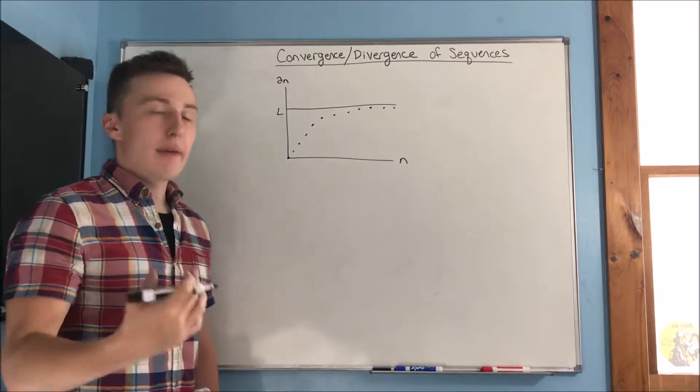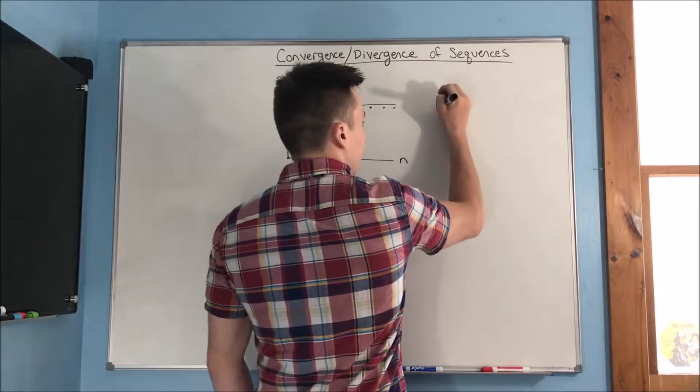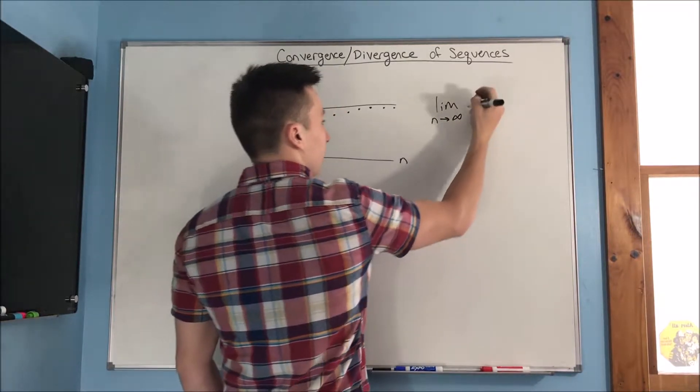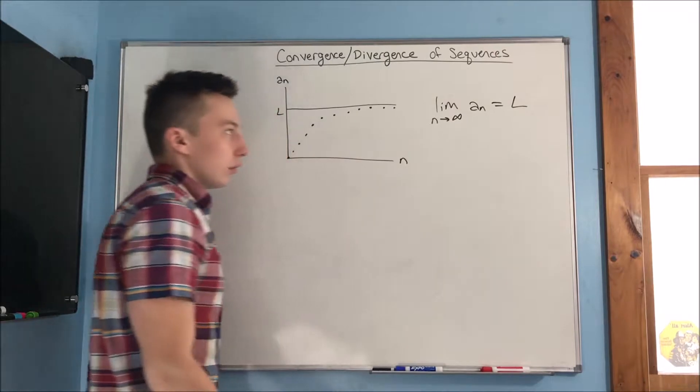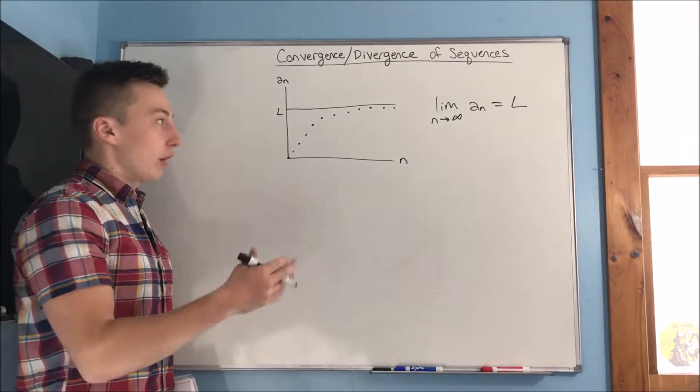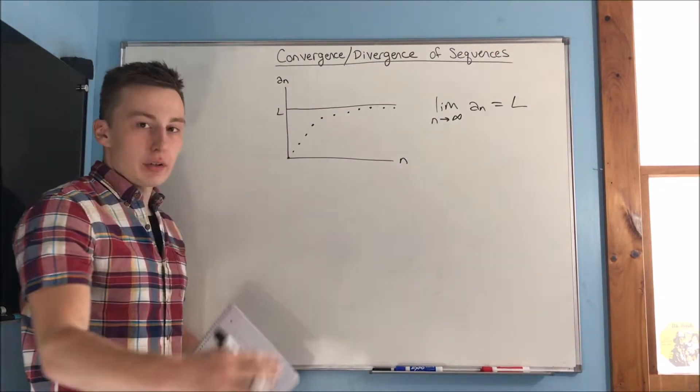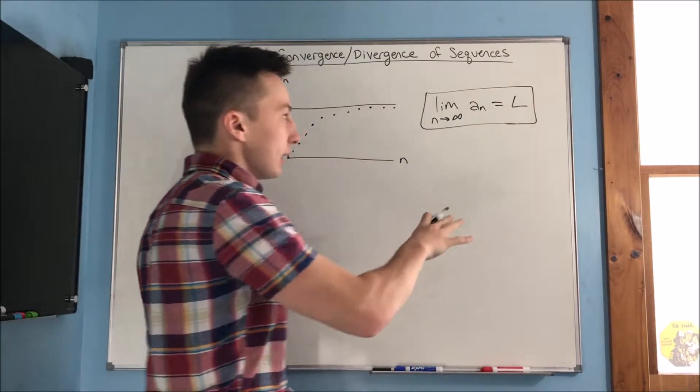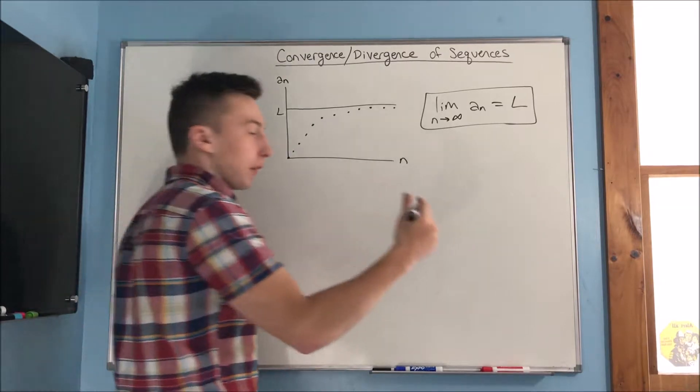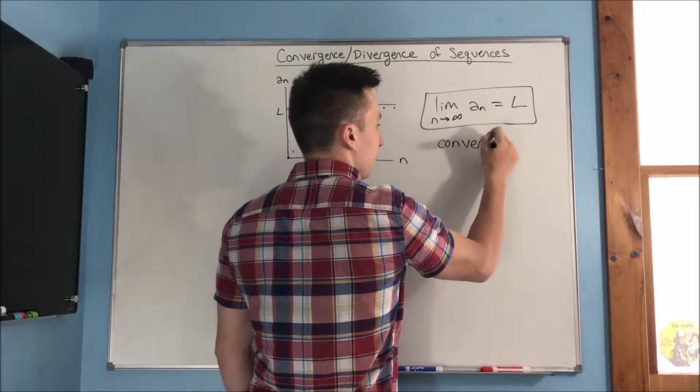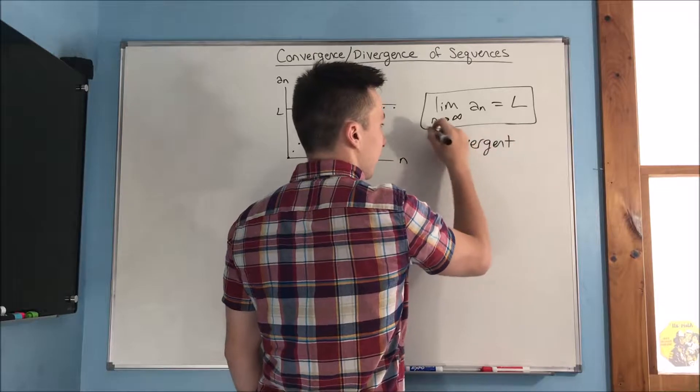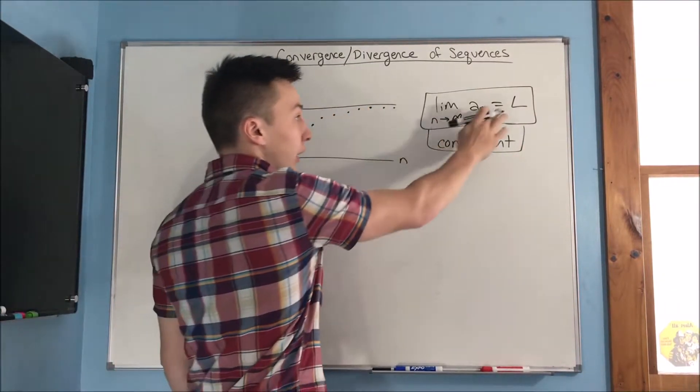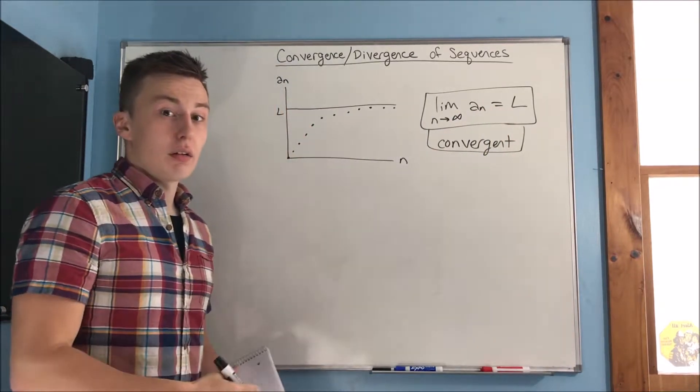So you kind of see here that as the limit, as n approaches infinity of a sub n is going to equal L. Like I said, L can be whatever a sub n value you want it to be. But you can see that this sequence is going to be convergent because that limit is not going to approach infinity, negative infinity, anything like that. It's approaching a finite value, which is going to be L.